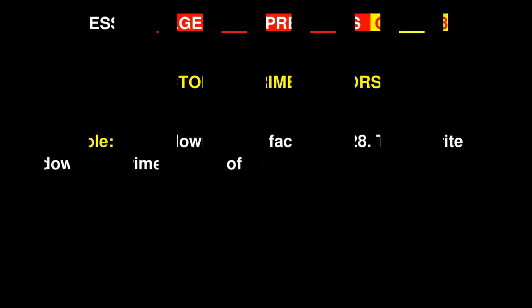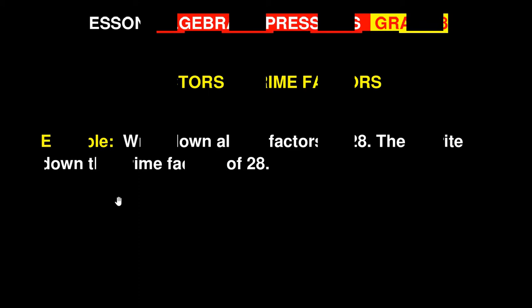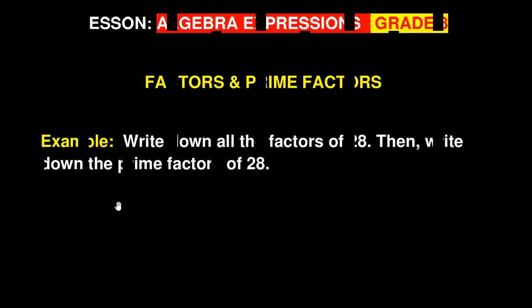I thought I should bring across one question that looks sometimes simpler but some might struggle solving. It's dealing with factors and prime factors as the topic. In this, it says write down all the factors of 28. That's the first part of the question. Then the second part says, then write down the prime factors of 28.